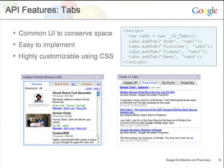Going a little more in depth into the tabs library — this is also one of our most popular libraries. It's really useful because it allows you to pack a lot more information into that small amount of space in your gadget by creating separate tabs. As you can see, it's just a small snippet of JavaScript required to add a bunch of tabs, and we have a wrapper library that makes it very easy to do this.